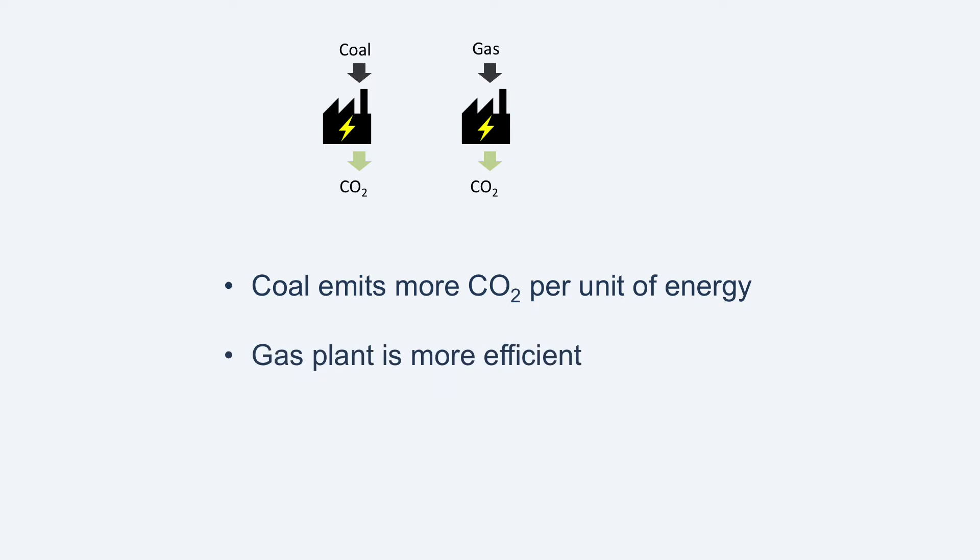It is also because gas-fuelled plants are usually more efficient than coal-fuelled plants — each unit of electricity made using gas requires less energy in. Put these two effects together, and you get coal plant emitting maybe two to two and a half times as much carbon dioxide as a gas plant for each unit of electricity produced, though this varies somewhat with which plants we're talking about.